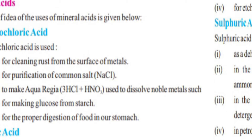Use number three: to make Aqua Regia, which is used to dissolve noble metals such as gold. The formula of Aqua Regia is 3HCl + HNO3 — that is, three molecules of hydrochloric acid and one molecule of nitric acid combine to form Aqua Regia. Use number four: for making glucose from starch. Starch found in potatoes is converted to glucose (sugar) using HCl.